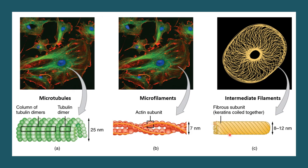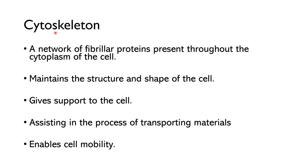Here is one keratin subunit, here is another, and here is another. Like this, various subunits of keratin combine to form the keratin filament. The cytoskeleton is a network of fibrillar proteins present throughout the cytoplasm. Its functions are to maintain the structure and shape of the cell, give support to the cell, assist the cell in transporting materials, and enable the mobility of the cell.